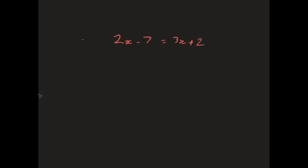So, don't let variables on both sides make you spin. Just do the same thing on both sides. Okay, let's do another one. 2x minus 7 equals 3x plus 2.